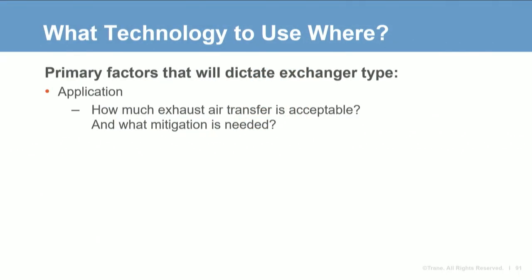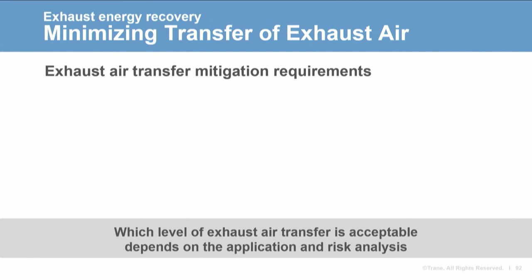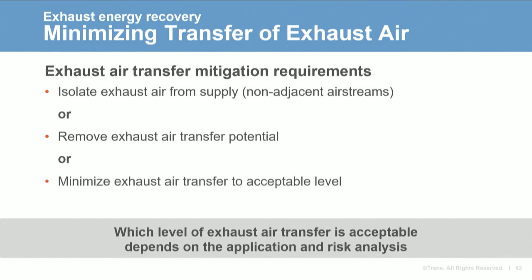What technology should be used where? Some applications will dictate the type of exchanger based on how much exhaust air transfer is acceptable, the quality of the exhaust air, the building site and available footprint, and sometimes customer preference. The first deciding factor is how critical it is to limit the transfer of exhaust air to the outdoor airstream: is full isolation required, is there just a desire to remove the transfer potential, or is the goal simply to minimize transfer to an acceptable level?